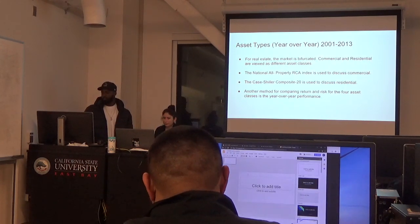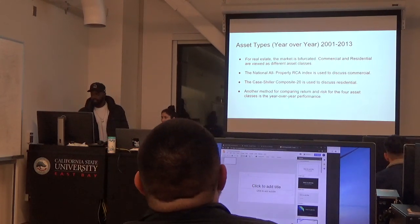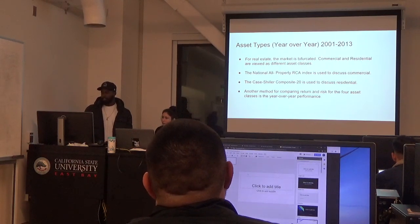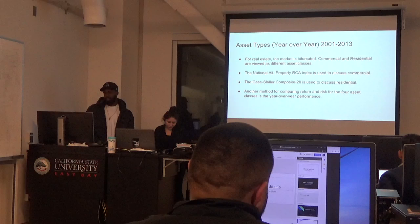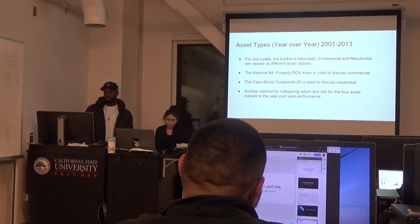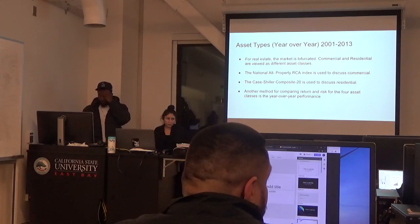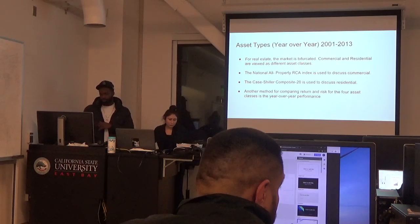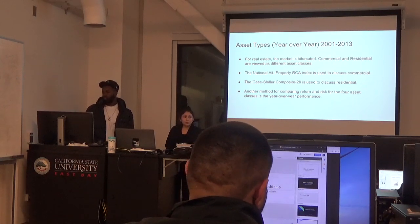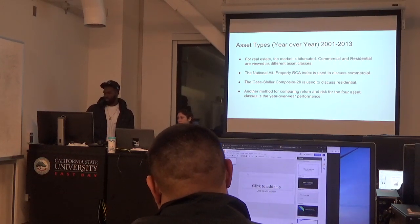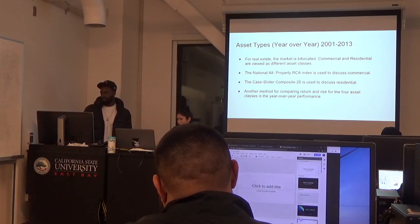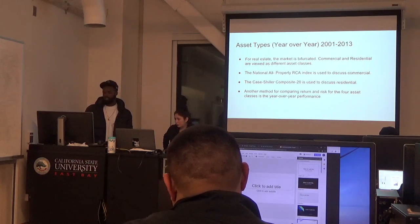Asset types, 2001 through 2019 — the market is dislocated. Commercial and residential are viewed as different asset classes. The national law of property RCA index is used to discuss the commercial, and the Case-Shiller Composite 20 is used to discuss the residential.